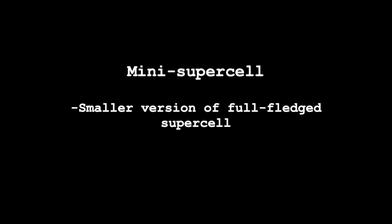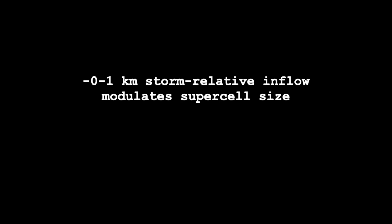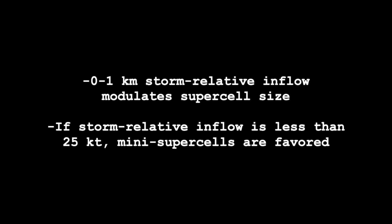Now there is one exception to these rules, and that is the mini supercell. Mini supercells are just smaller versions of full-fledged supercells — same type of structure, same hazards, but smaller in size. Mini supercells by nature don't produce as much precipitation. Therefore, if you have an environment that might at first glance suggest more high precipitation supercells, if the environment also favors mini supercells, that might not actually come to fruition. The storm relative winds in the lowest kilometer of the atmosphere modulate supercell size — this is called storm relative inflow. Stronger storm relative inflow means more mass is getting pulled into the storm and the storm is likely to be larger, whereas weaker storm relative inflow means less mass and a smaller storm. A general rule of thumb is that if storm relative inflow in the zero to one kilometer layer is less than 25 knots, mini supercells will be favored.